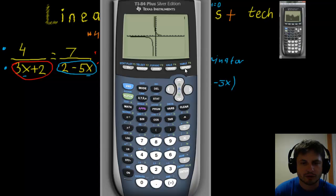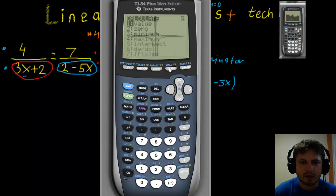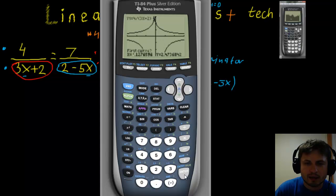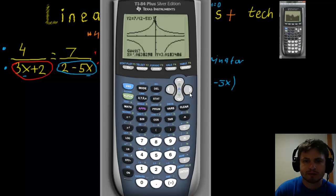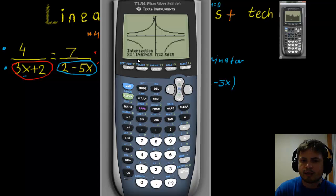Click enter. You can view the graph if interested — it looks quite fancy — but what we actually care about is finding the intersection. Go into Second > CALC and select Intersect. The calculator asks for your first curve (Y1), your second curve (Y2), and then a guess. If there's only one intersection just press enter, and you get the answer: x ≈ minus 1.463.